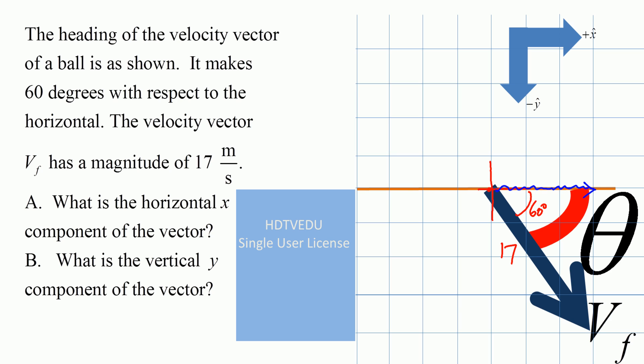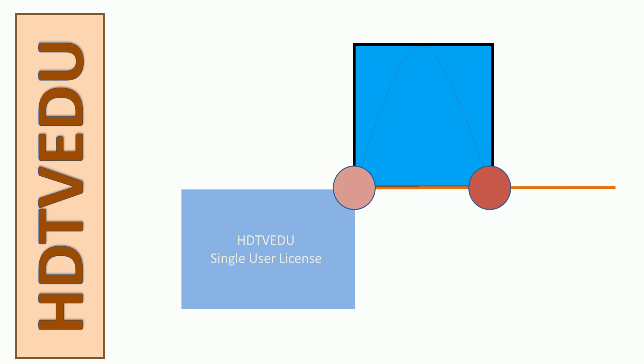That is our horizontal component and this is our vertical component. So the question is: what is the horizontal component Vfx, and what is the vertical component Vfy? Whenever we kick a ball at an angle, it has a horizontal component and a vertical component. We can replace each vector by its horizontal and vertical components. Once you have the horizontal and vertical components, it's as good as having the vector.